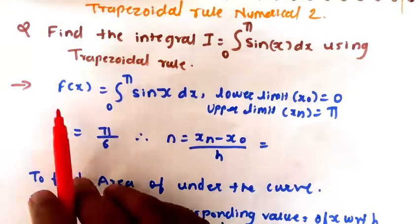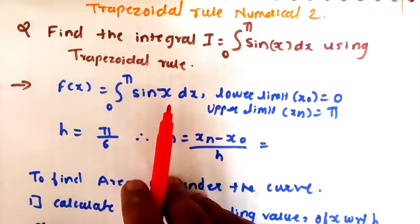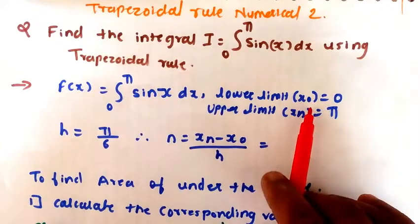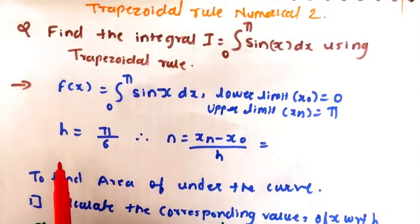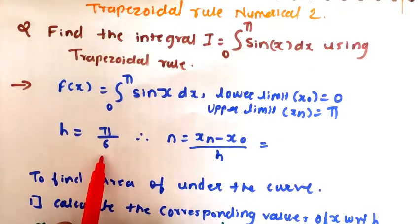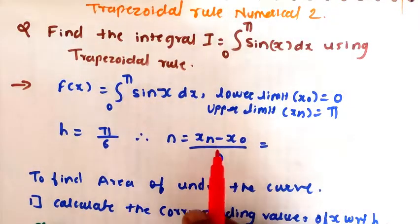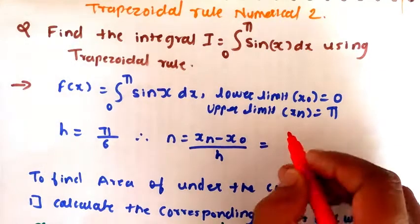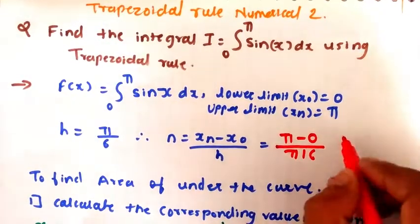In the solution, f(x) is the integration from 0 to π of sin(x) dx. The lower limit is x0 = 0 and the upper limit is xn = π. The step size h is π/6. Therefore, n is calculated using the formula (xn − x0) / h = (π − 0) / (π/6) = 6.